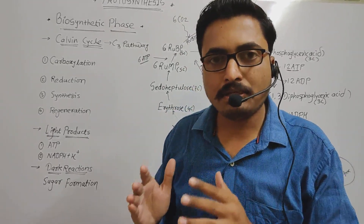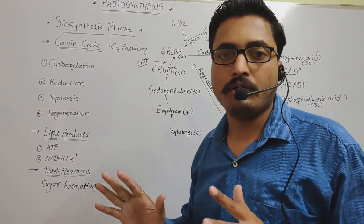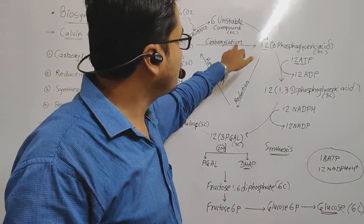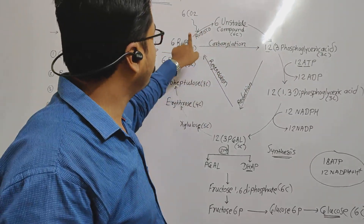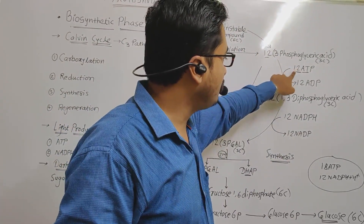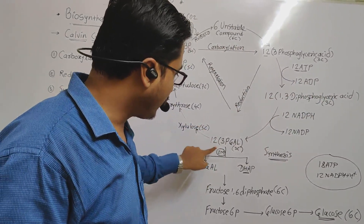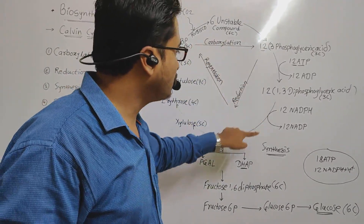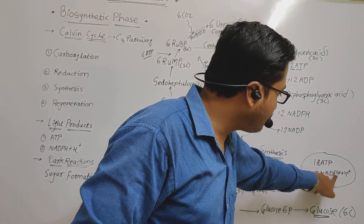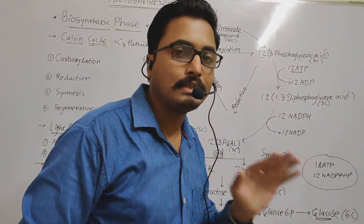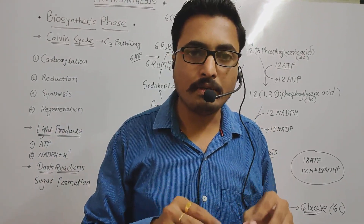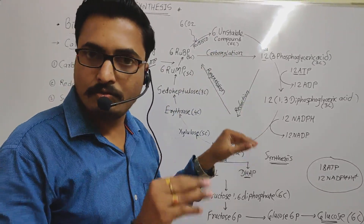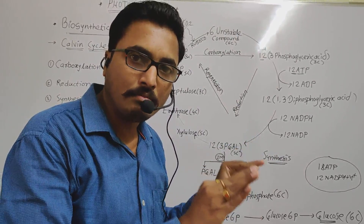The key concepts here are: the dark reaction, the Calvin cycle, and how sugar molecules are formed. This entire process is already repeated in glycolysis — you mainly need to remember the processes of carboxylation, reduction, and regeneration. The calculation — 12 ATP utilized in reduction, 12 NADPH+H⁺ — must be remembered. Out of 12 PGAL molecules, 2 go into glucose synthesis and 10 go into regeneration.